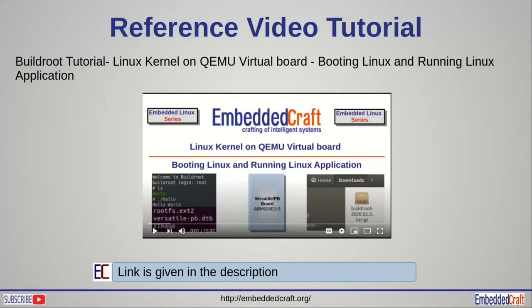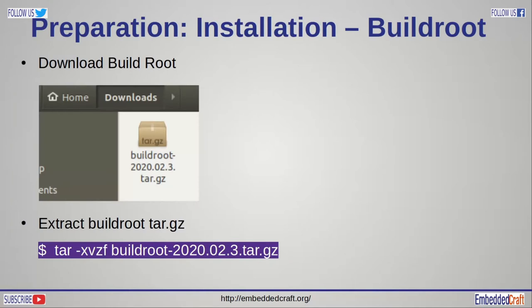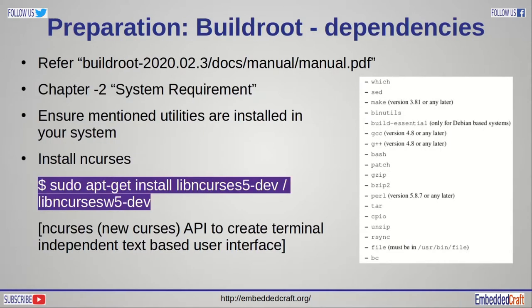We have already created a video tutorial which demonstrates installation of Buildroot. I will not go into details about installation of Buildroot — you can refer to that video, link is given in description. In that video tutorial we showed using Buildroot to generate Linux kernel for QEMU. In brief, we have to download Buildroot. We are using a Buildroot tar file. Installation is very simple — simply extract the downloaded Buildroot tar file and make sure all dependencies are met. For this refer to the Buildroot manual file.